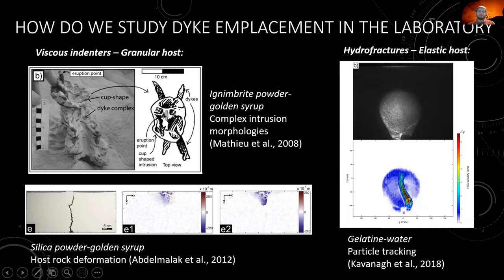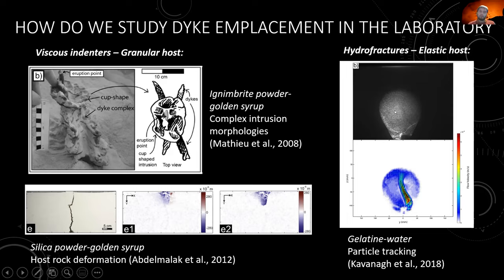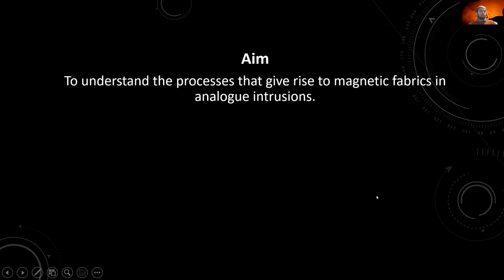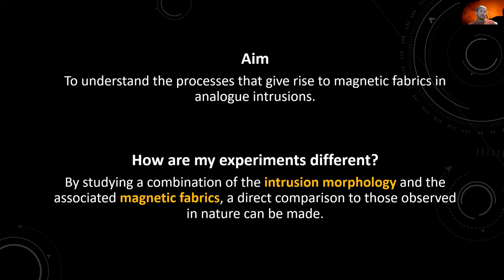For elastic models, the most common are gelatin models — a block of gelatin in a darkened room with small particles in the injected fluid, illuminated by a laser sheet. Particle image velocimetry then tracks where particles move through time. This has shown a jet forming through the center of the dike with flow back down at the dike edges. The aim of this project was to understand the processes that give rise to magnetic fabrics within analog intrusions, combining intrusion morphology with associated magnetic fabrics that can be directly compared with those seen in nature.